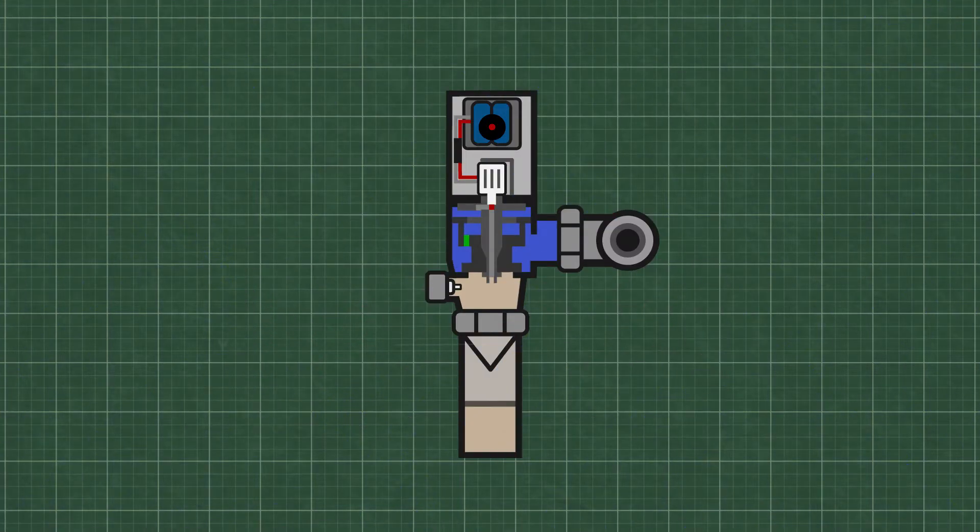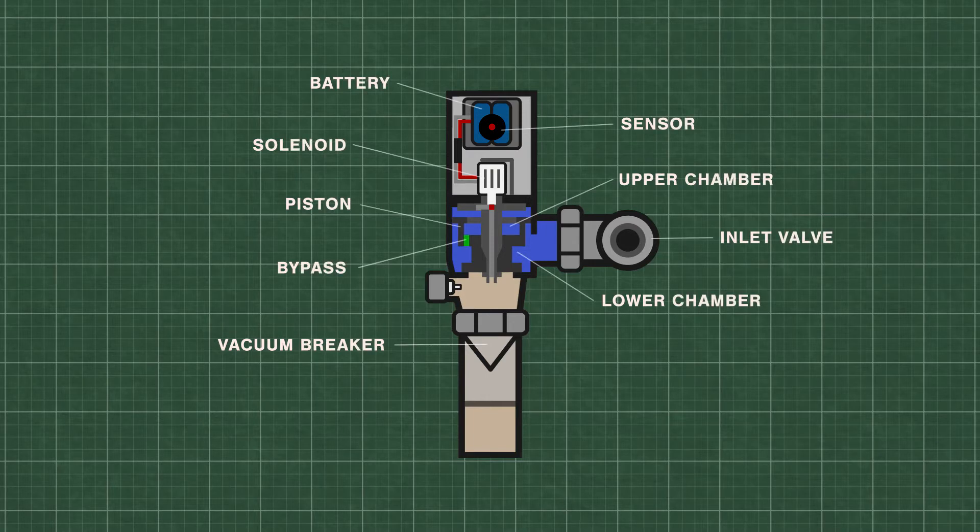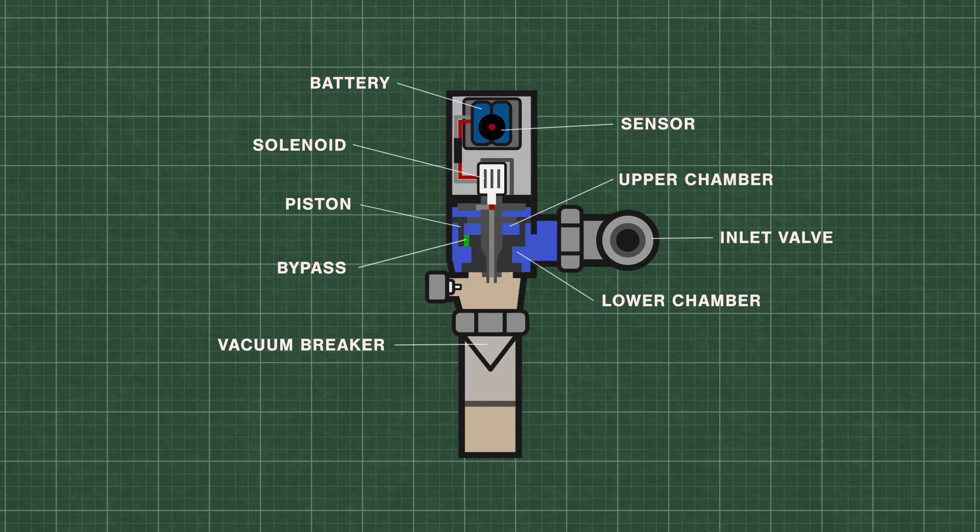Flushometers or flush valves are just automatically timed self-closing valves. At rest, water is at equal pressure in the upper and lower chambers. This keeps the piston closed tightly on the valve seat.